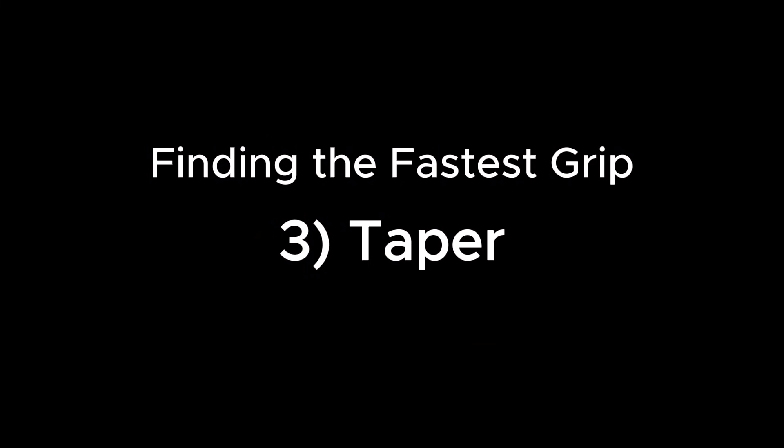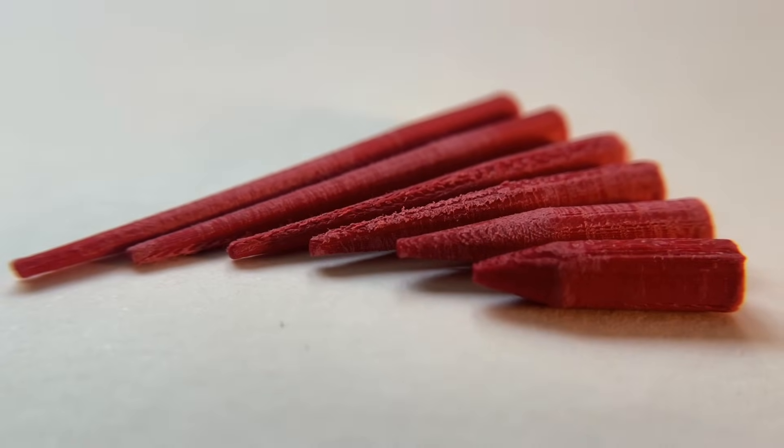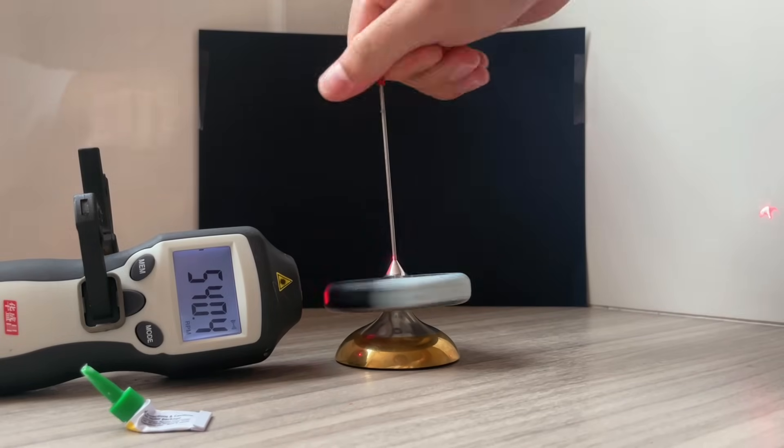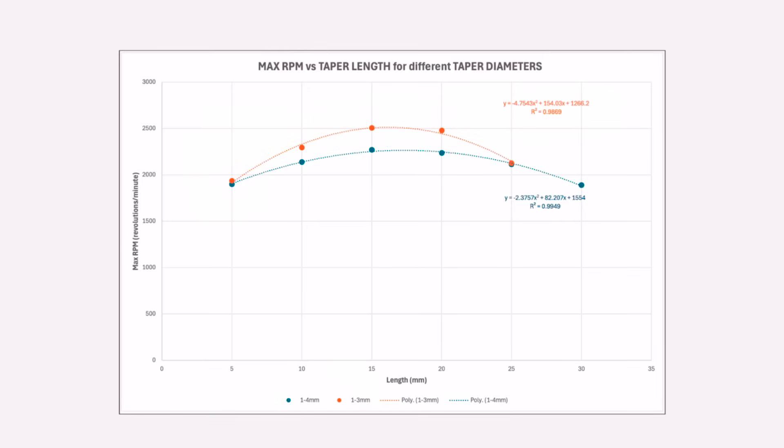So my next experiments were to determine the optimal taper. I decided I wanted the thick end to be larger than the stem, and for the thin end to be smaller. So I made some 4 to 1 and 3 to 1 millimeter tapers. Then I varied the length of these from 5 to 30 millimeters. And here are the results. Interestingly, in both cases, it looks like the optimal length was around 15 to 20 millimeters. I suspect this is partly due to the flexibility of plastic at such fine scales, but I went with it anyway.